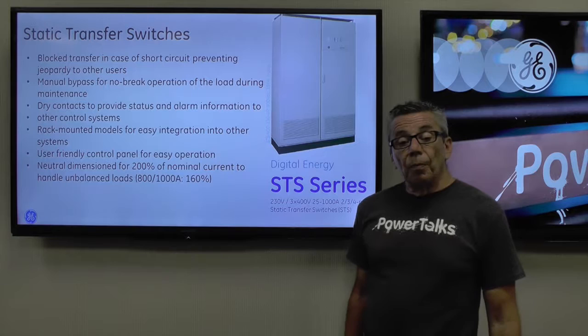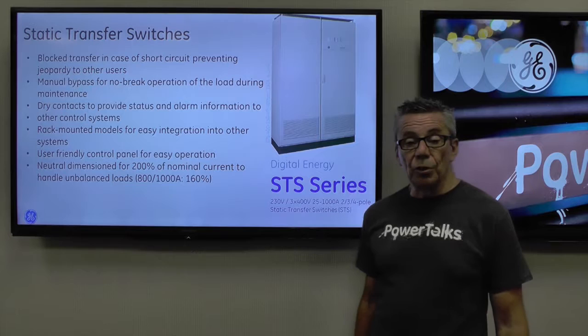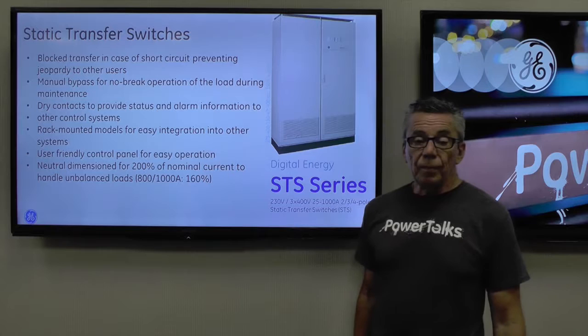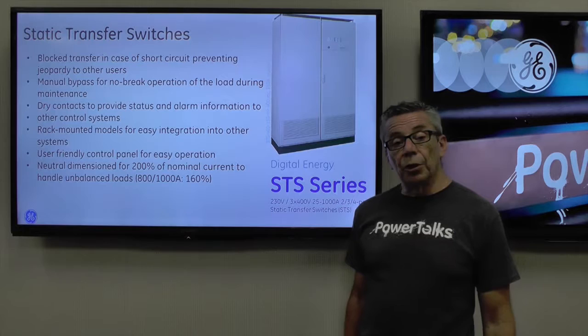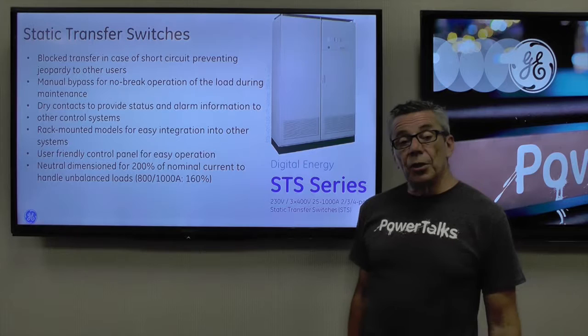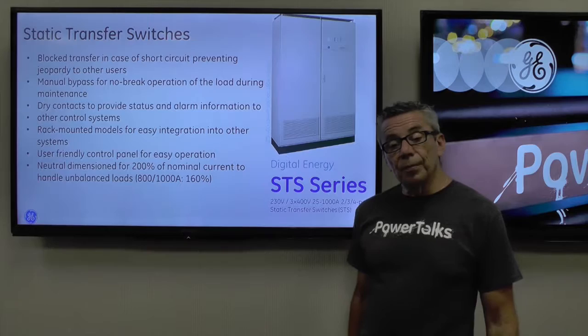The system will block transfer in case of short circuit, preventing jeopardy to other users. Manual bypass allows for no-break operation. Dry contacts provide status for remote monitoring and alarm information. Units can be rack mounted for integration with other equipment, and there's a user-friendly control panel for easy operation. The neutral is dimensioned for 200% of rated capacity to handle unbalanced loads.